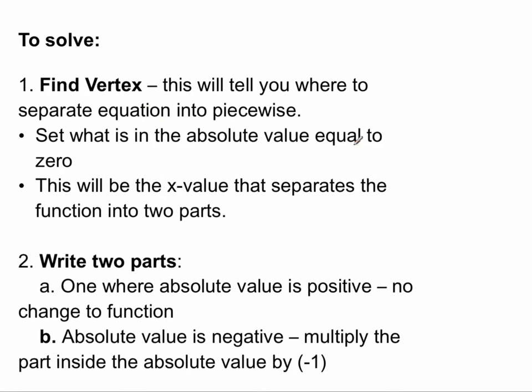Now how do you do these? The first thing you need to do is find the vertex. This will tell you where to separate the equation into pieces. You set whatever is in the absolute value equal to zero. This will be the x-value that separates the function into two parts.